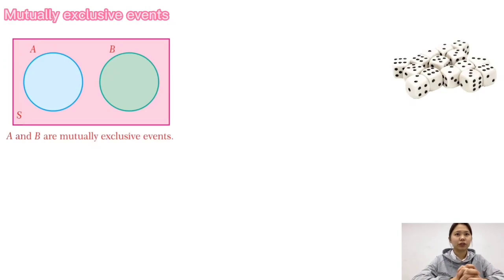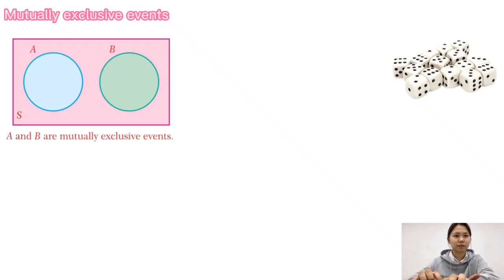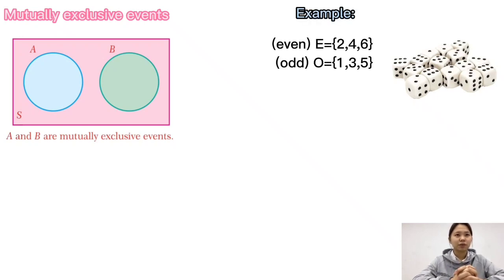Next, mutually exclusive events. Two events which cannot occur at the same time are called mutually exclusive events. In other words, if two events have no outcome in common, then they are mutually exclusive events. For example, in rolling a die, the event that the number rolled is even, E = {2, 4, 6}, and the event that the number rolled is odd, O = {1, 3, 5}, have no outcome in common, making them mutually exclusive.